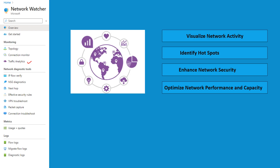The third feature is traffic analytics. Traffic analytics leverages Azure Network Watcher flow logs to provide actionable insight into network activity, security, and performance. By visualizing network traffic, identifying high-traffic areas, securing the network against potential threats, optimizing deployments, and pinpointing misconfigurations, it helps maintain a robust and efficient cloud network infrastructure. The key activities are: visualize network activities, identify hotspots, enhance network security, and optimize network performance and capacity.